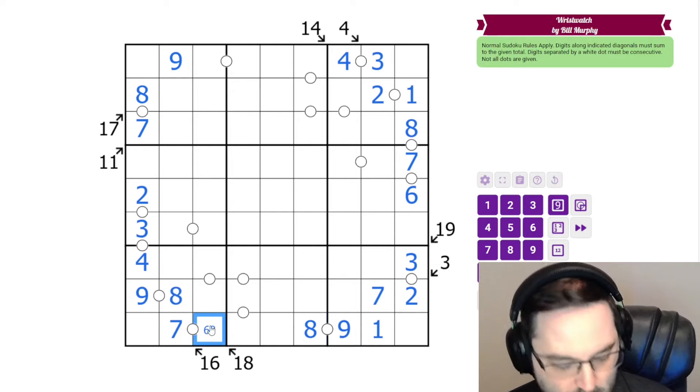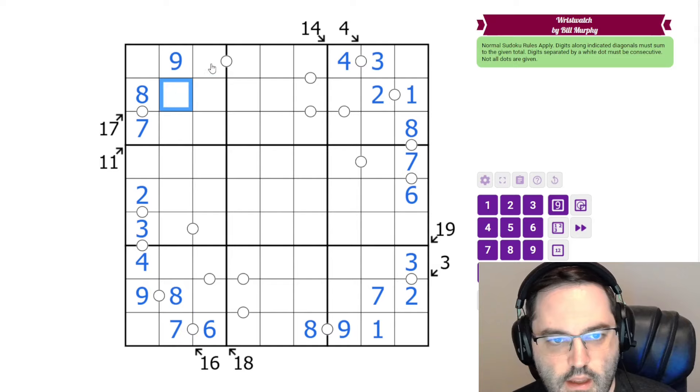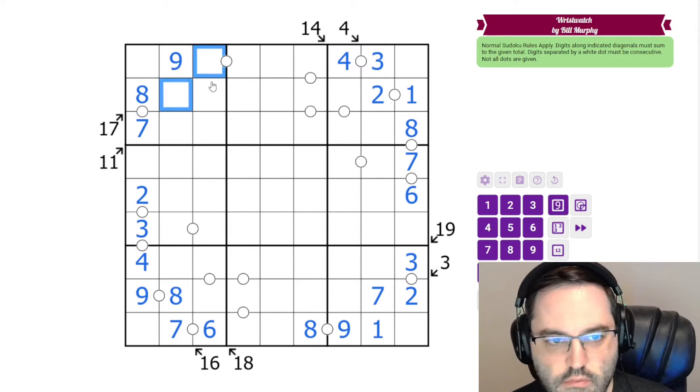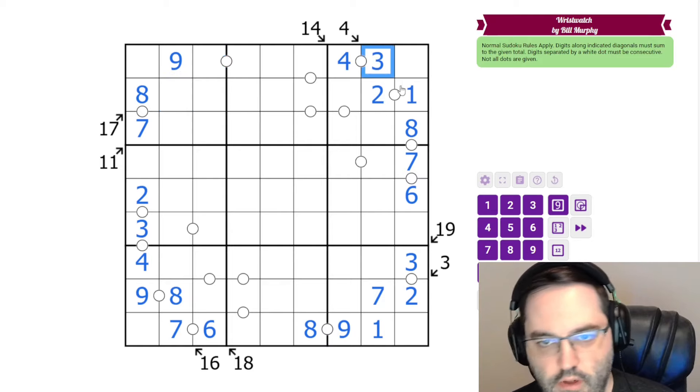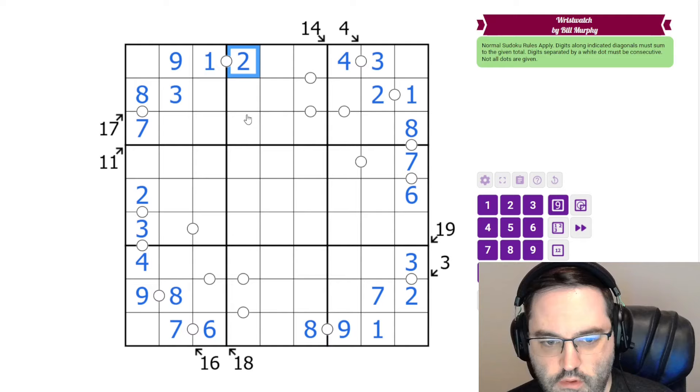The 9s have to be consecutive with 8, and so that puts a 6 here. And now the 11 clue, we already have a 7, so we need 4 as our remainder. The only way to do that is 1, 3. And we need a 2 next to the 1 here. So that is all of the little killer clues. It's not all of the consecutive clues yet, but we will get there.